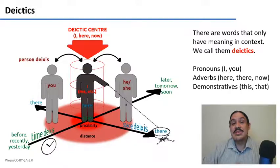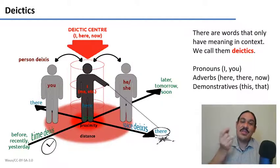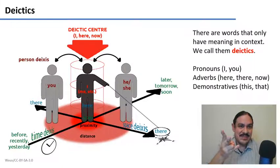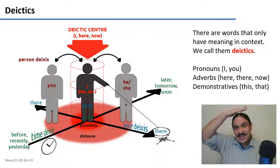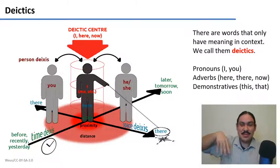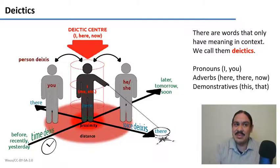There's also words that are demonstratives, such as this or that. You can only know what this is by knowing the context of the person, knowing what's near them, and knowing what specific object they're referring to.